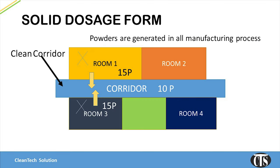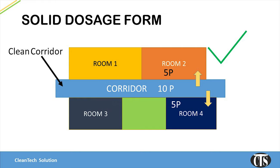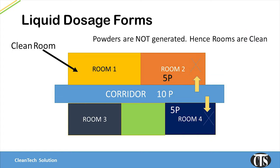Now let us consider an area where oral solid dosage forms are manufactured. According to regulatory guidelines, the room has to be supplied with air through a HEPA filter. A manufacturing area for OSD will have lots of particles constantly generated during the OSD manufacturing process. If the corridor has a lower pressure compared to the room, air from the room will move into the corridor when doors are opened, contaminating the corridor with particles and causing cross-contamination. Hence, in OSD manufacturing, corridors are kept at higher pressure and rooms at lower pressure. Where liquid dosage forms are manufactured, powders are not generally generated. Hence, liquid processing rooms are classified as clean areas and corridors are unclean or dirty areas.